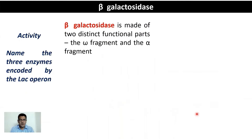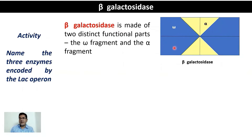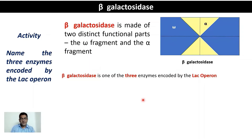The key enzyme involved in blue-white screening is beta-galactosidase, made up of two distinct functional parts: the omega fragment and the alpha fragment. It is a tetramer — four omega polypeptides and four alpha peptides. The omega polypeptides can polymerize only in the presence of the alpha polypeptide; without alpha, a functional beta-galactosidase is not formed. Beta-galactosidase is one of three enzymes encoded by the lac operon and metabolizes lactose into glucose and galactose.